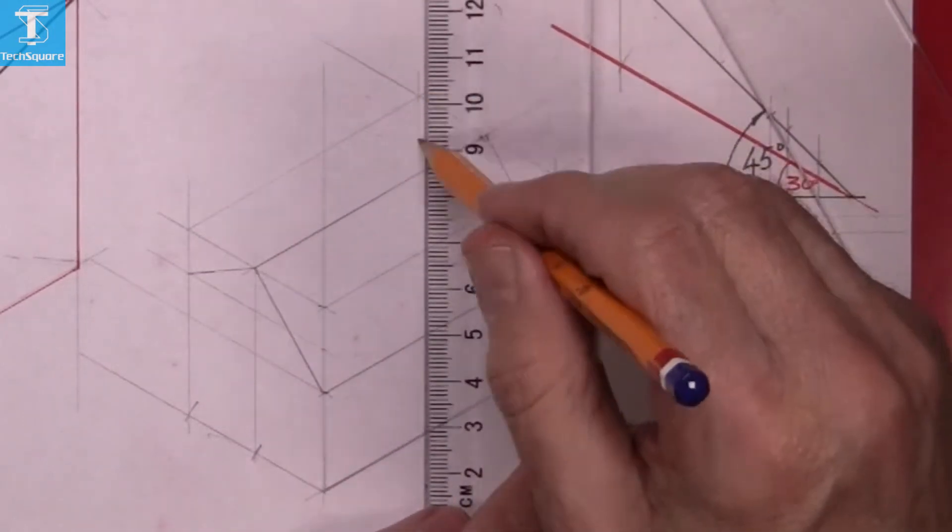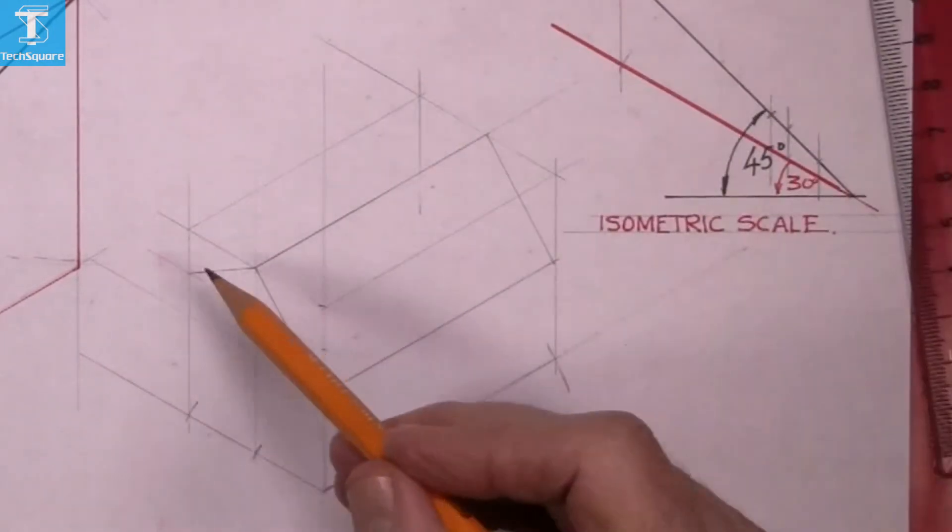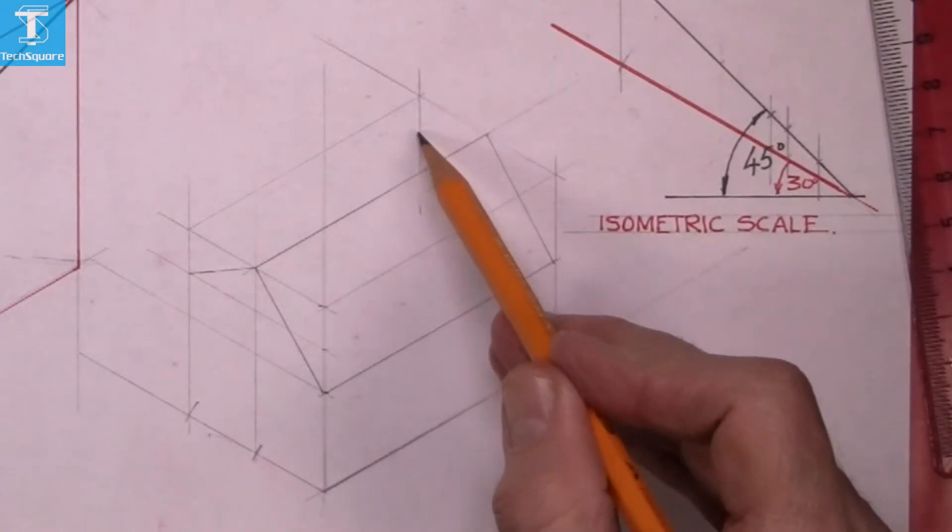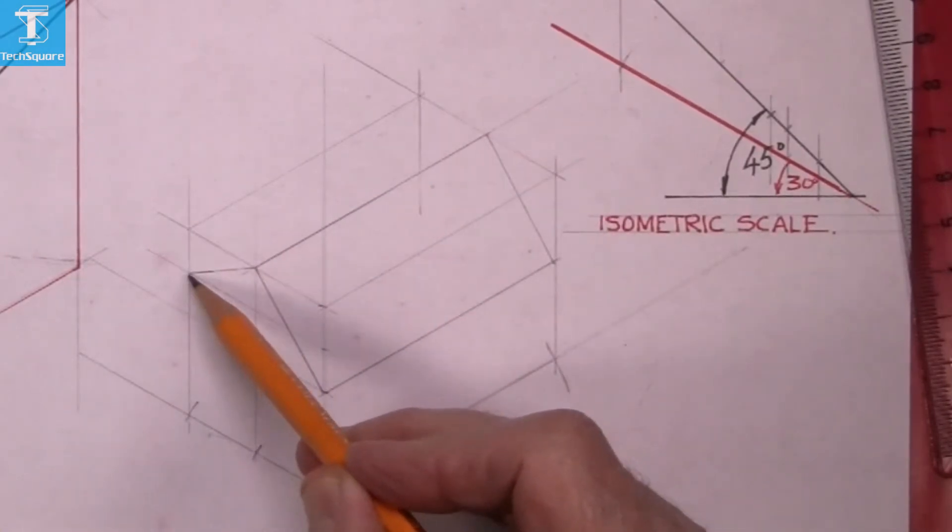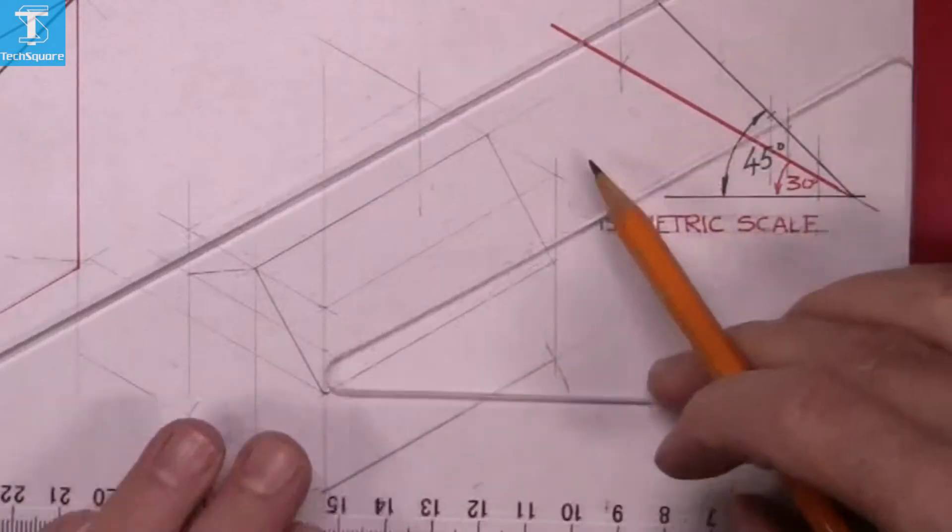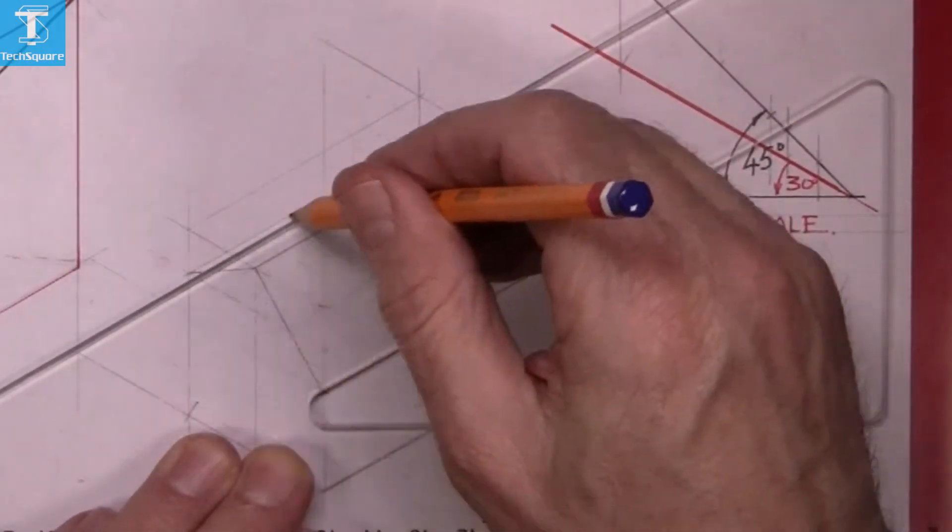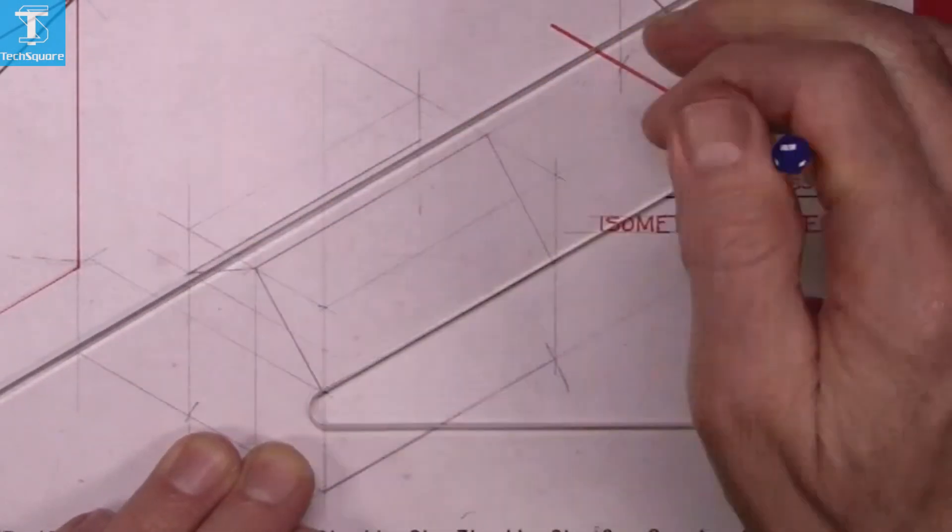And then when you come back from the front point now, bring that point back along at your 30 degrees until it intersects there. And that's the back gutter.